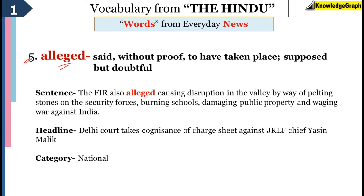The next word is alleged. If you are in the habit of reading newspapers, you know you come across this word very, very often. Alleged means something that has been said without any proof — something that is supposed but doubtful. It is assumed that a certain thing has happened but it is still doubtful whether it has happened or not. The sentence was: 'The FIR also alleged causing interception in the valley by way of pelting stones on security forces, burning schools, damaging public property, and waging war against India.' So the FIR stated these things happened but it is not yet certain.